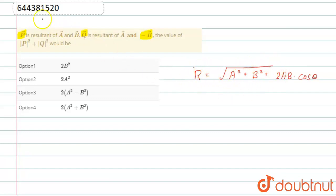So in our case, the resultant is given to be P, so I can write P is equal to root of A square plus B square plus two AB cos theta.